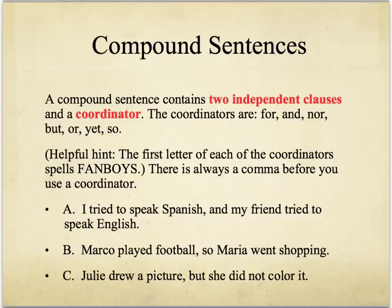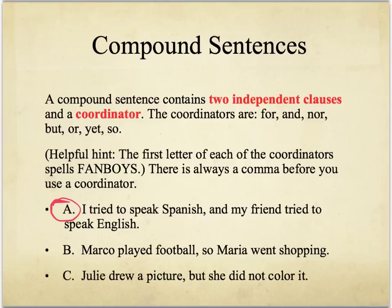An independent clause is a sentence that is a complete thought. But instead of saying, for example, 'I tried to speak Spanish,' period, and then saying 'my friend tried to speak English,' period — because if we don't have coordinators, which are words like for, and, nor, but, or, yet, or so, then you can't really combine them.